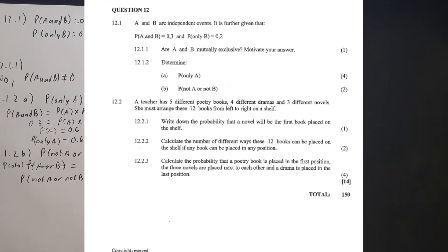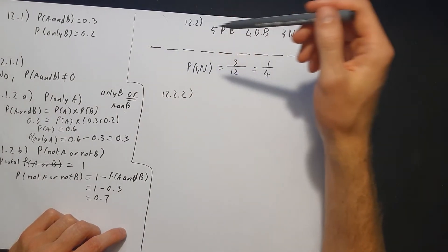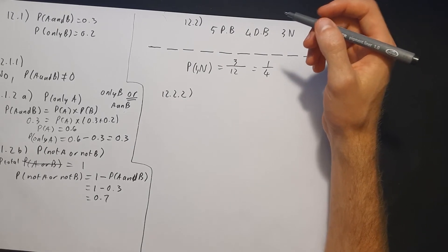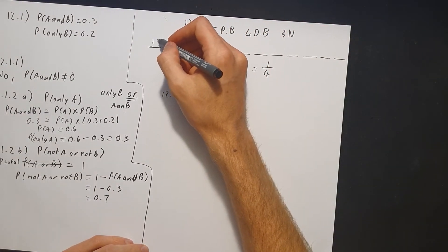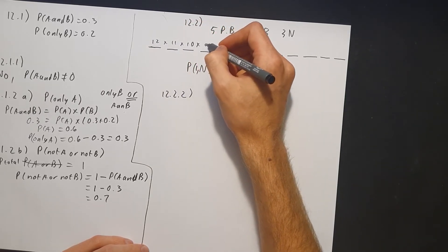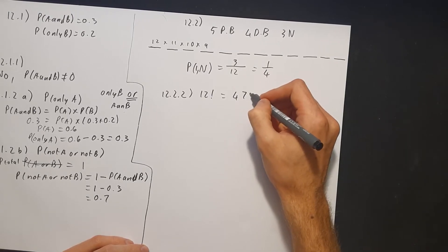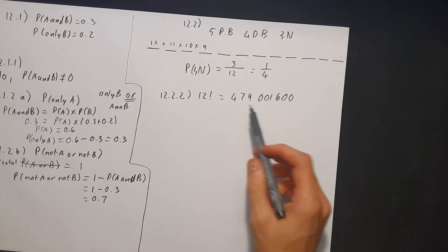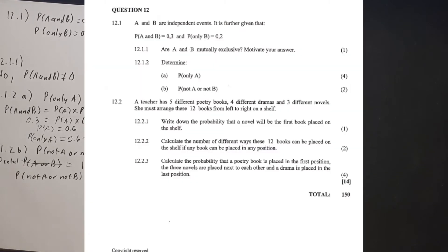Question 12.2.2 asks to calculate the number of different ways 12 books can be placed on a shelf if any book can be placed in any position — meaning you can start with poetry, end with poetry, or have all novels together. There are 12 spots and 12 books, so filling all positions gives 12 factorial, which equals 479,001,600 — about 479 million options.